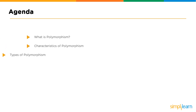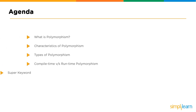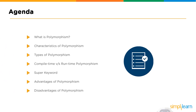Let's cover polymorphism. You should already have a good understanding of inheritance before you dive into polymorphism. We're going to cover what is polymorphism, characteristics of polymorphism, types of polymorphism, compile time versus runtime polymorphism, the super keyword, advantages of polymorphism, and the disadvantages of polymorphism.